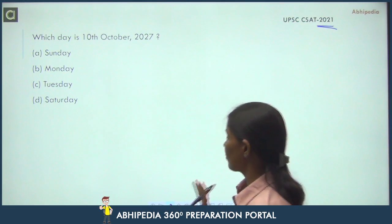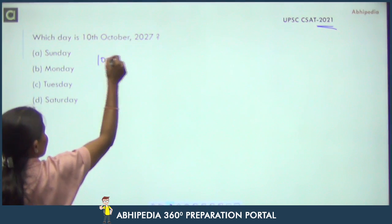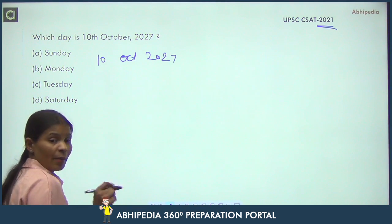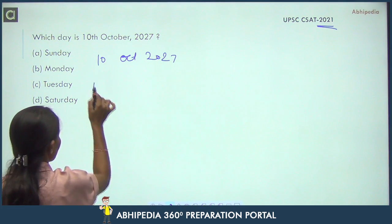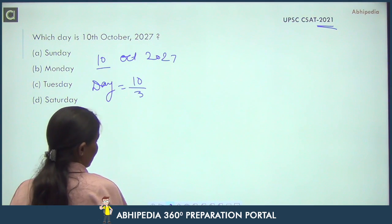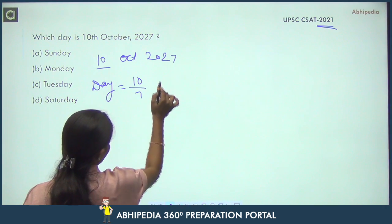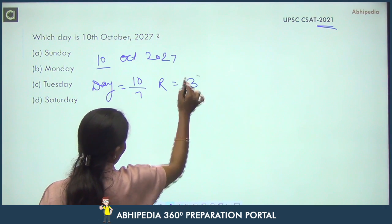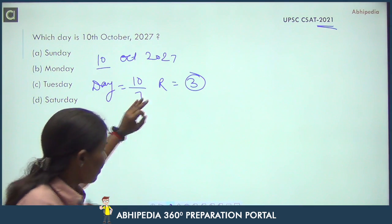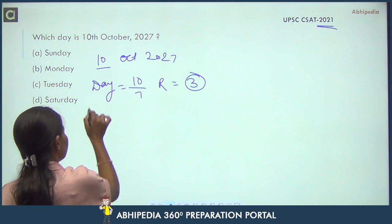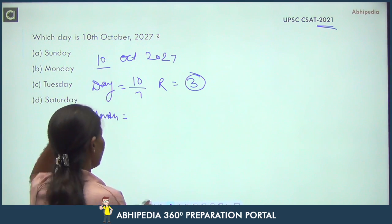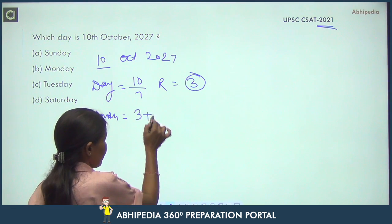Method 1 for 10th October 2027: For the date = 10, divide by 7, remainder = 3. So 3 odd days from the date. For the month, October means we take January through September. January: 3 odd days. February: 0.